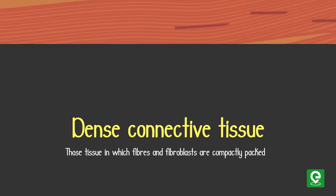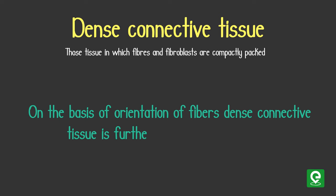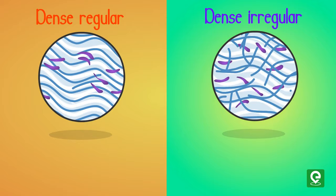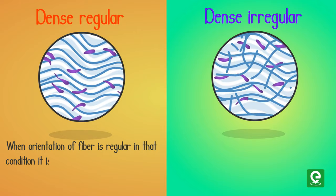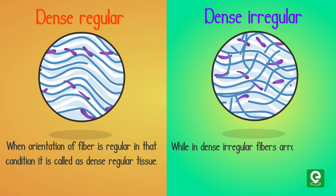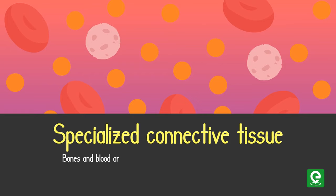On the basis of orientation of fibers, dense connective tissue is further divided into two types: dense regular and dense irregular. When the orientation of fibers is regular, it is called dense regular tissue, while in dense irregular, fibers are arranged in an irregular pattern. Specialized connective tissue includes bones and blood.